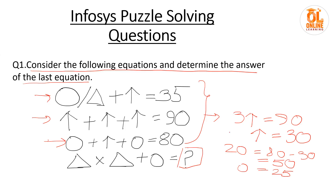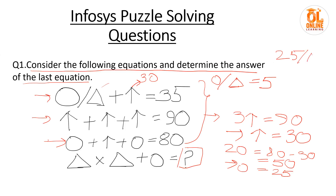Now you know the value of arrow and the value of circle. Put it in — arrow value is 30. So circle divided by triangle will be 5. You know circle value is 25, so 25 divided by triangle equals 5, or 5 times triangle equals 25, therefore triangle equals 5. Now you know the values of triangle, circle, and arrow.